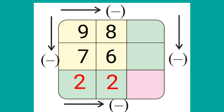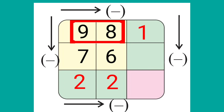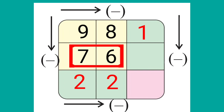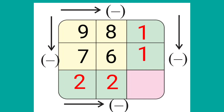Kids, in the next step, we will subtract the number at the right from the number at the left in the first row. 9 minus 8 is equal to 1. In the second row, 7 minus 6 will be equal to 1.